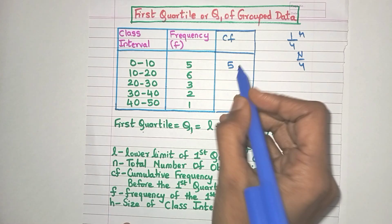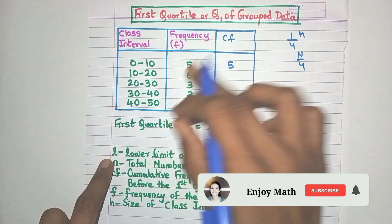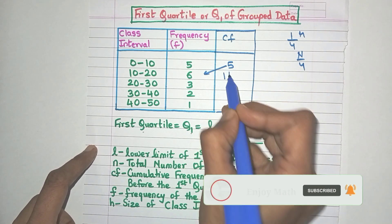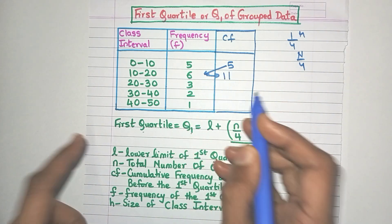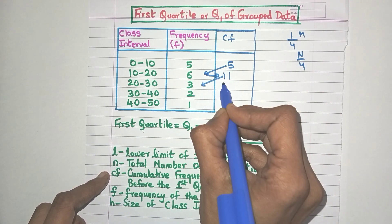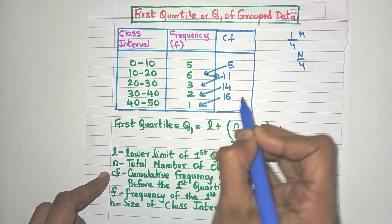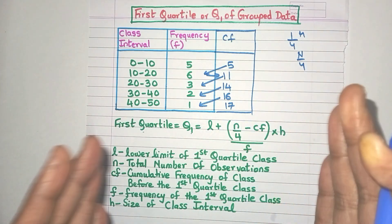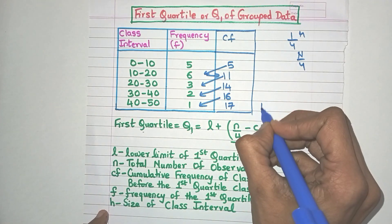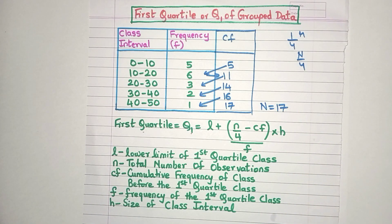For the remaining class intervals, the CF will be the frequency of that class interval plus the CF of the previous class. So here it will be 5 plus 6, which is 11. For 20 to 30 it will be 11 plus 3, which is 14. Then 14 plus 2 is 16, and 16 plus 1 is 17. The last CF value always gives you the total number of observations, n, which is 17 here.